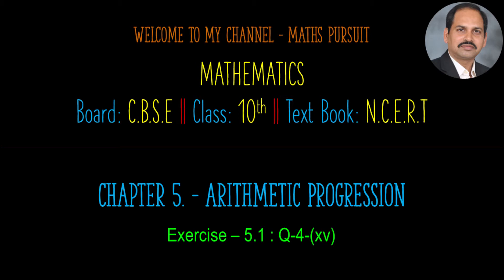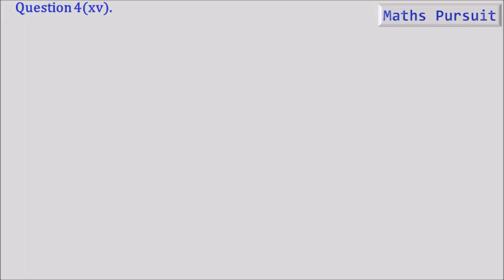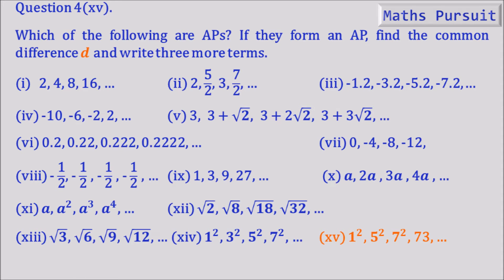The question asks: which of the following are APs? If they form an AP, find the common difference D and write three more terms. The given number sequence is 1², 5², 7², 73.